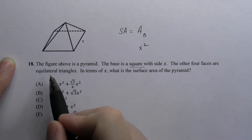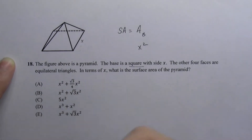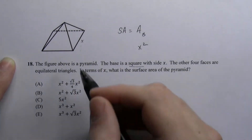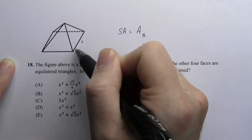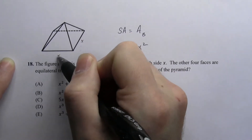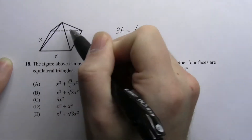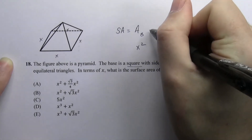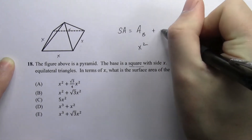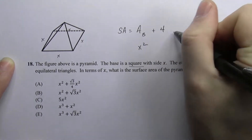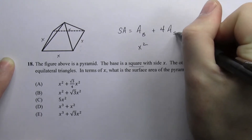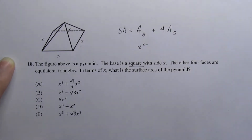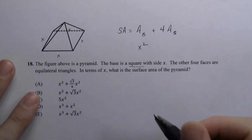The other four faces are equilateral triangles, and they're all the same equilateral triangle because they all share the same side — each side is x. To find the total surface area, we need to find the area of one of the sides. It's three dimensions and hard to visualize, so let's turn it into two dimensions.